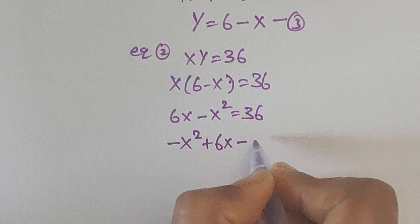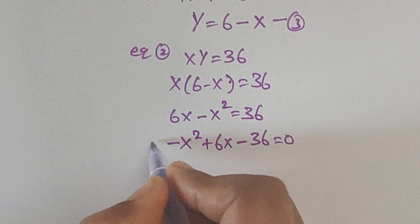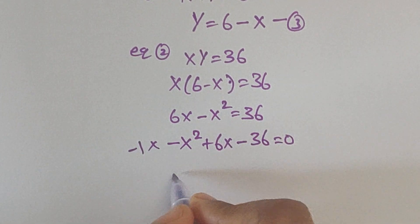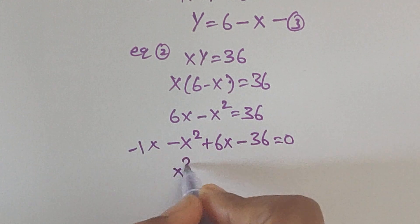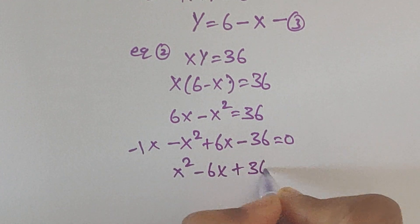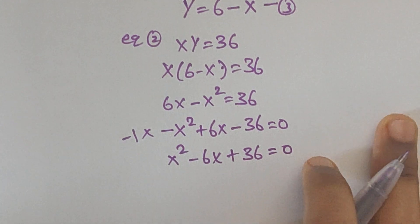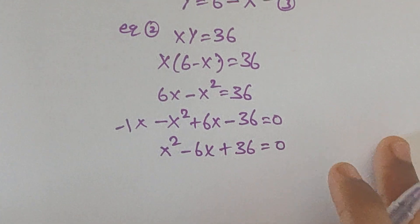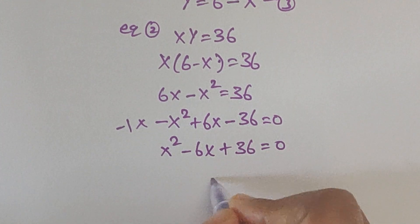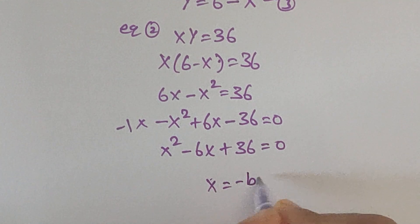So now it becomes minus x squared plus 6x minus 36 equals 0. Multiplying through by minus 1, it becomes x squared minus 6x plus 36 equals 0.